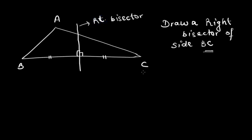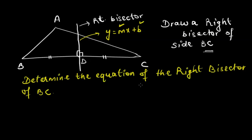Let's say the right bisector meets line BC at point D and we want to write the equation of this right bisector. The equation can be written in y = mx + b form, where we need the slope and the y-intercept of this line. We will follow the steps as outlined.